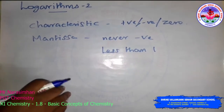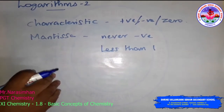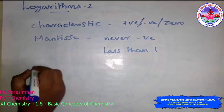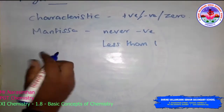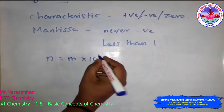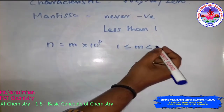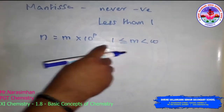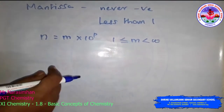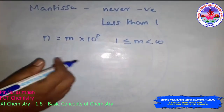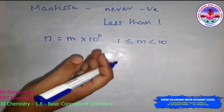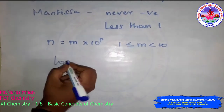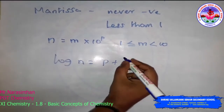To find log n: first, put n in standard form n equal to m into 10 power p. Then read off the characteristic p from that expression, and look up log m from the log tables available in your textbook — in physics, chemistry part-one textbooks — or you can use standard log tables. Then write log n equal to p plus log m.